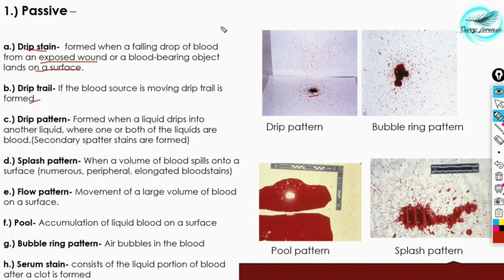If the blood source is moving, a drip trail is formed. If the injured person from whom blood is coming is moving in a certain direction, the blood will also drop in that direction. Through that, we can trace the movement of that person. This is termed a drip trail.